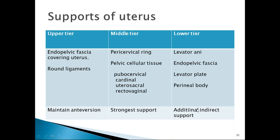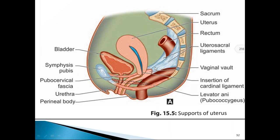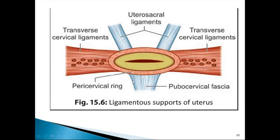In the sagittal section, the uterosacral ligaments are visible; the transverse cervical ligament is seen in another view. The upper tier has round and broad ligaments maintaining anteversion without providing main support. The middle tier gives the strongest support: uterosacral, cardinal, anteriorly pubocervical, and posteriorly rectovaginal fascia. The lower tier is provided by levator ani on either side. The pericervical ring is seen on cross-section: two transverse cervical ligaments, two uterosacral ligaments, and pubocervical fascia surrounding the cervix.